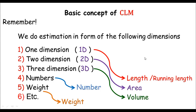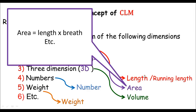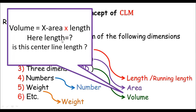Coming back to my approach — if you see, everything just does have length in there. The length is just a length, so this means this would be just the center line length. If you see the area, the area is just length times breadth. Basically, length times breadth is area, so the area does have length in there. And of course the volume does have length as well — the volume is cross sectional area times the length. So here is the length, and the length means the center line length.